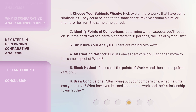3. Structure your analysis: There are mainly two ways. Alternating Method: Discuss one aspect of work A and then move to the same aspect of work B. Block Method: Discuss all the points of work A and then all the points of work B. Draw Conclusions: After laying out your comparisons, what insights can you derive? What have you learned about each work and their relationship to each other?